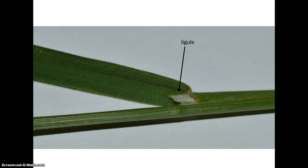There are some other optional features to the leaves in the grass family, such as the ligule. The ligule, shown here, is at the junction between the sheath and the blade. The ligule is usually membranous, but it can also sometimes be made of bristles, and it will have a characteristic size and shape, which is often useful in identifying a grass.